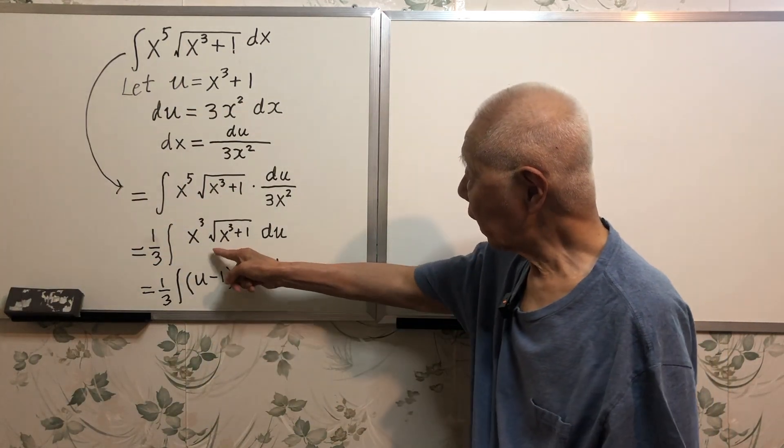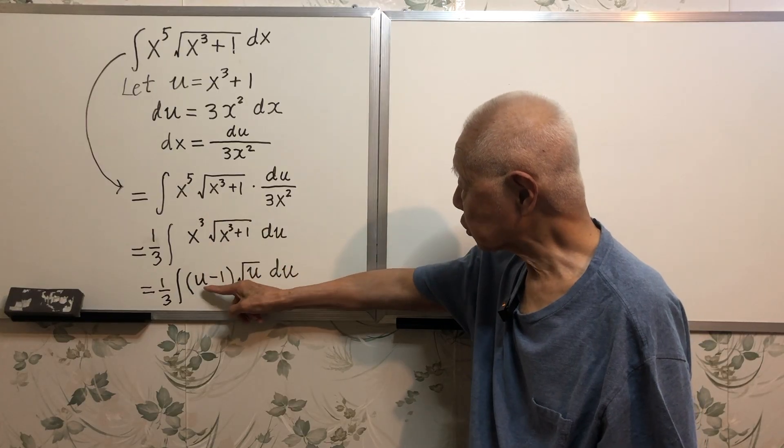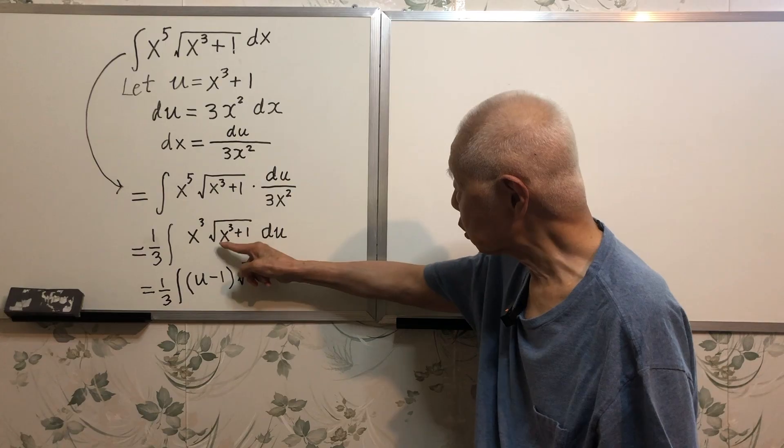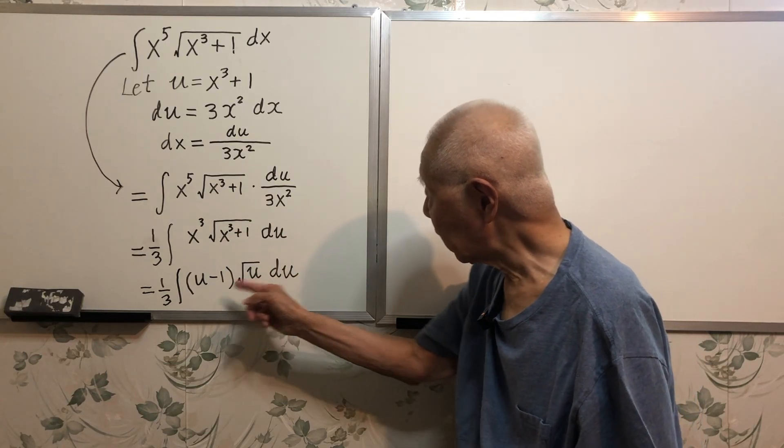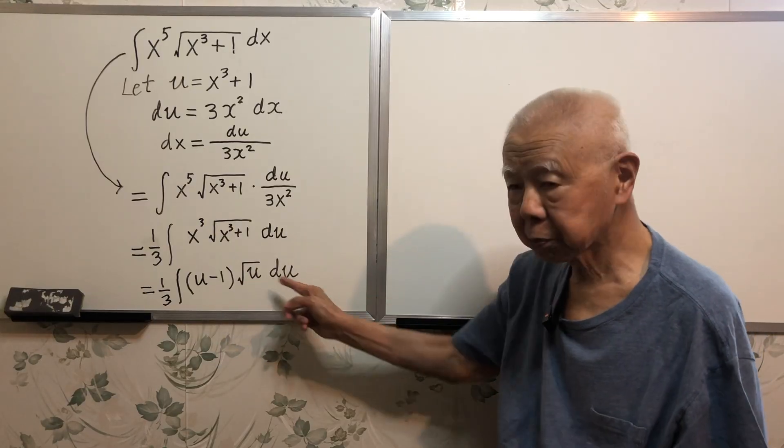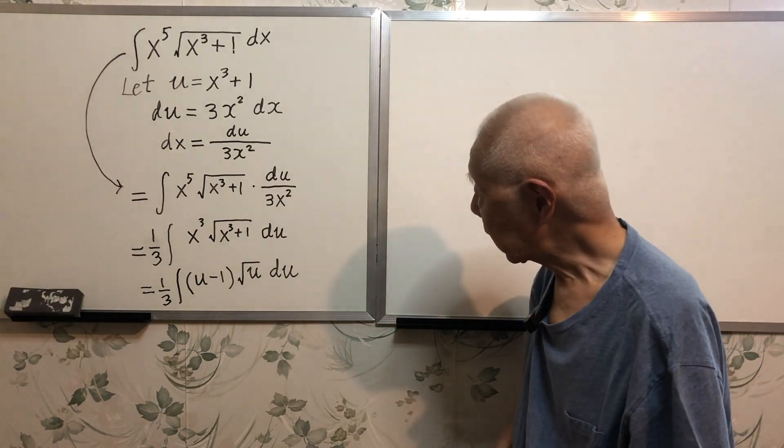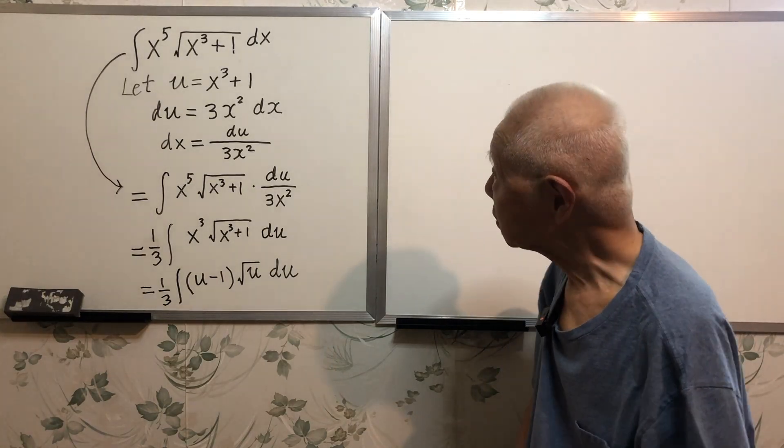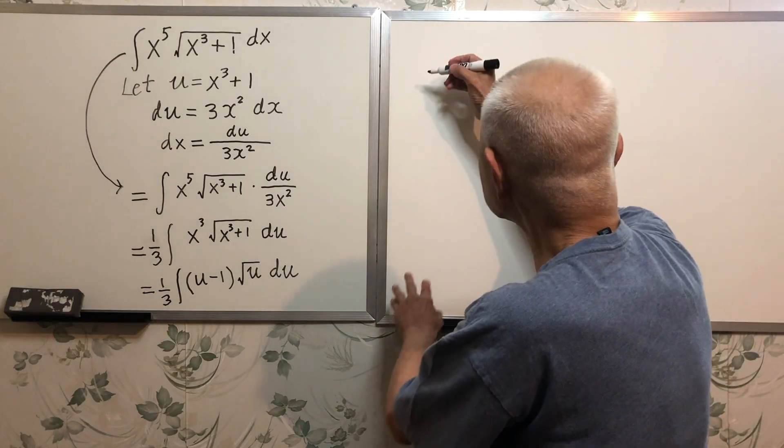x cubed is just u minus 1 and this is u, so square root u. Now I have the integral, integration with respect to u only, and this can be integrated easily, so continue.